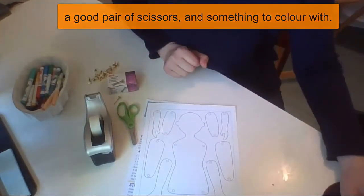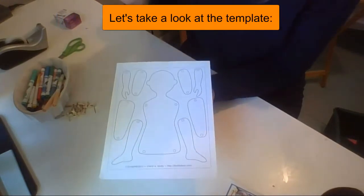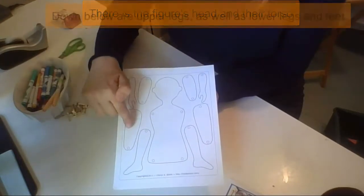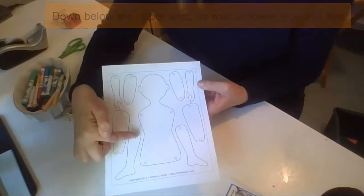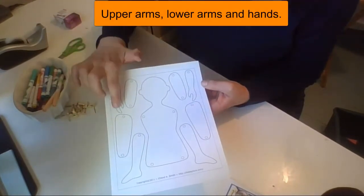All right, let's get going. Let's take a look at the template itself. So here we have the figure's head and their torso. Down below we have their upper legs, their thighs, along with their lower legs and their feet, upper arms, lower arms and hands.